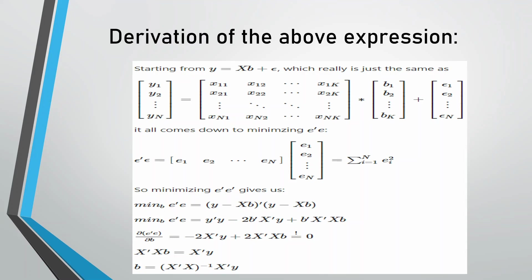e represents y minus Xb, since y = Xb + e. Squaring both sides in matrix form gives e-transpose * e, which is (y - Xb)-transpose * (y - Xb).